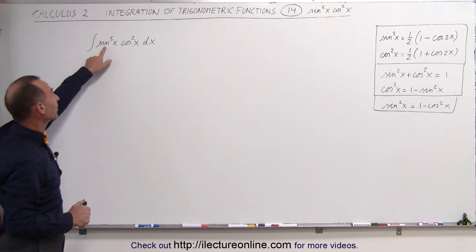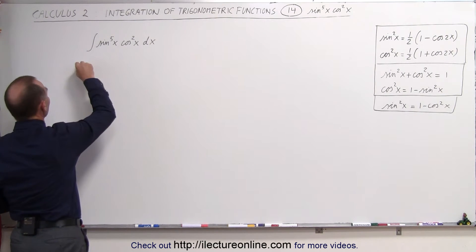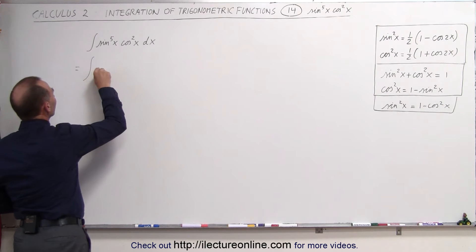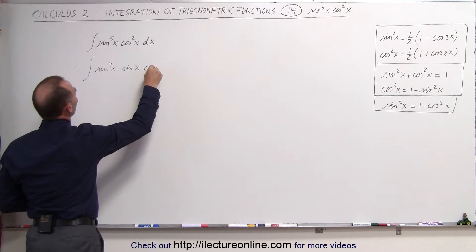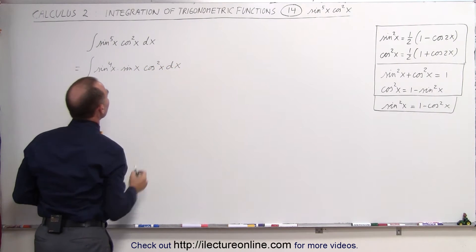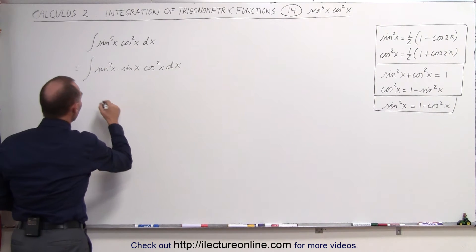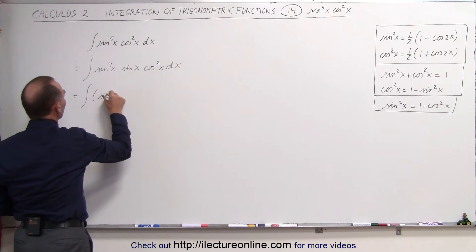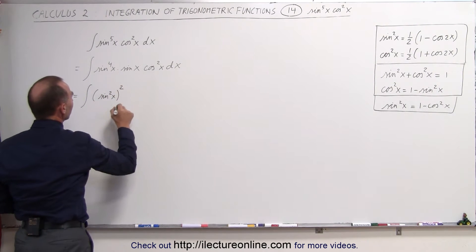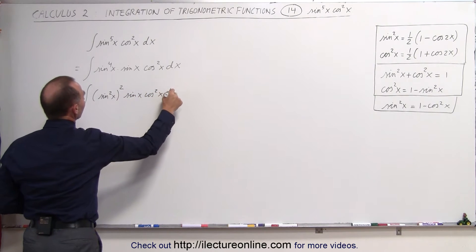The trick here is to rewrite sine to the fifth power of x as follows. We're going to rewrite this as the integral of sine to the fourth power of x times sine to the first power of x times cosine squared of x times dx. Now sine to the fourth power of x can be written as the integral of the sine squared of x, quantity squared, times sine of x times cosine squared of x times dx.